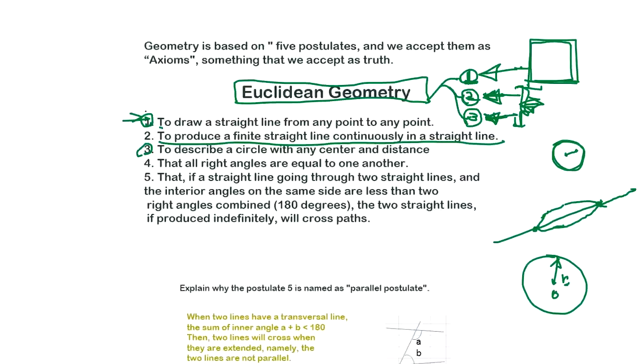And that's all right angles are equal to another. All right angles are equal to another, so when you draw the right angle, then other side is also right angle. And that's something to do with what is the sum of internal angle of triangle. If a straight line going through two straight lines, and interior angle on the same side are less than two right angles combined, and two straight lines, if produced indefinitely, will cross paths.